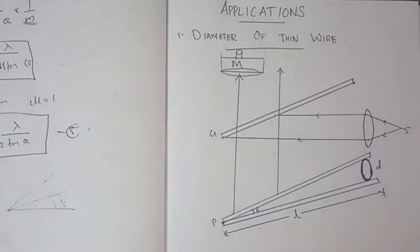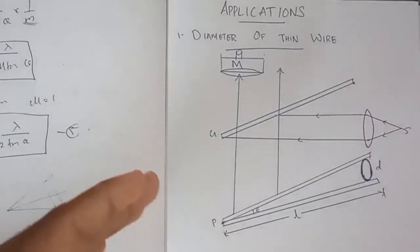Air wedge is about two topics. The first topic is diameter of thin wire.